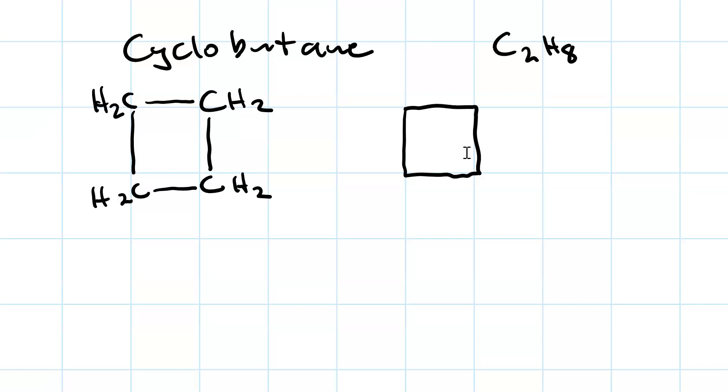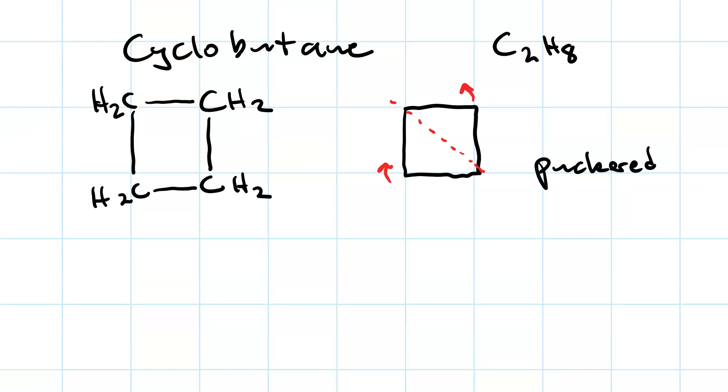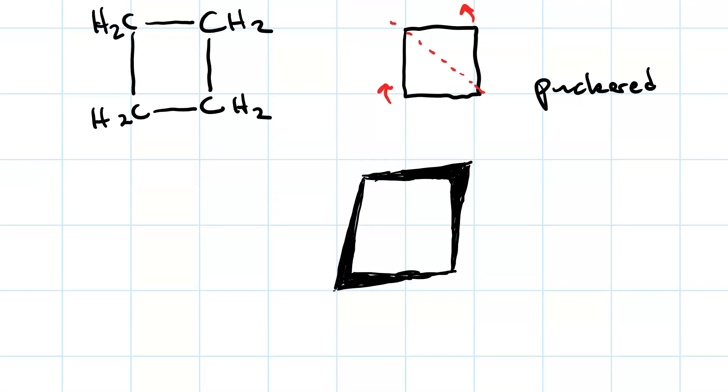In fact, cyclobutane adopts what's called a puckered conformation. You can imagine folding the molecule slightly down the diagonal, bringing this corner and this corner up slightly. In the puckered conformation, these two angles are slightly more than 90 degrees, and these two are slightly less. So its angle strain is a wash.